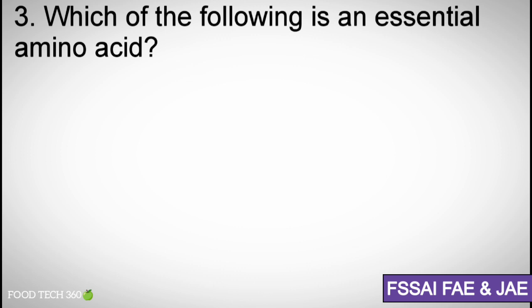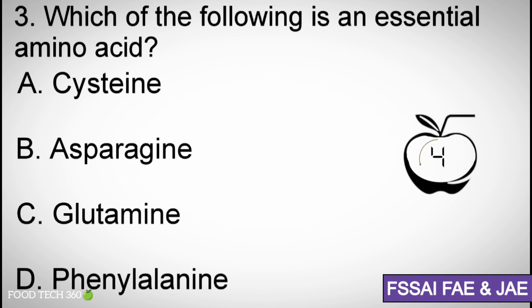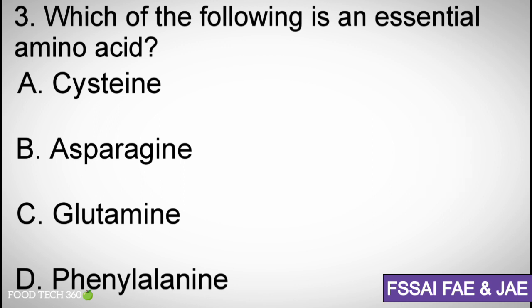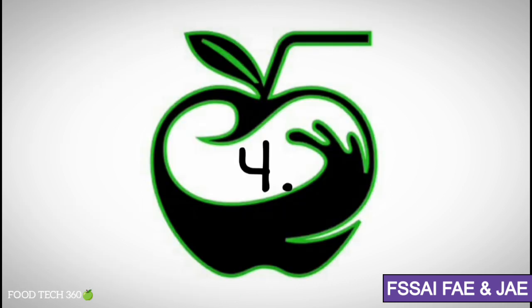Question number 3: Which of the following is an essential amino acid? A. Cysteine, B. Asparagine, C. Glutamine, D. Phenylalanine. Correct answer: D. Phenylalanine.